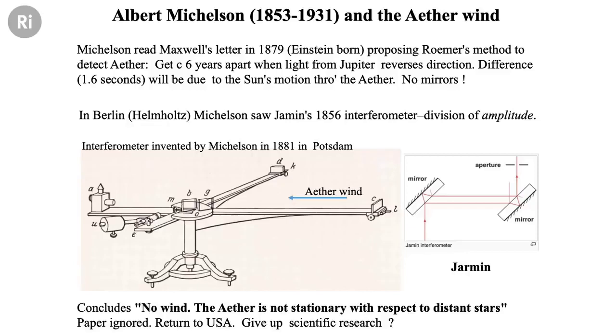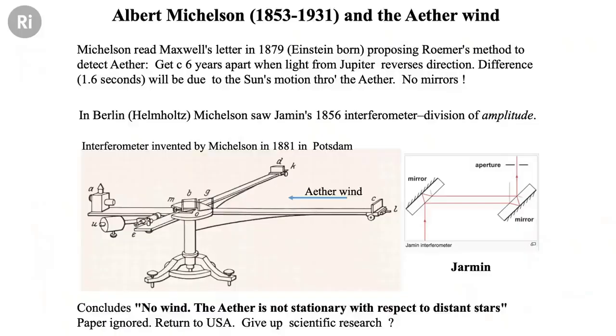He expected there to be a change, certainly six months later when the Earth was going in the opposite direction. When he rotated his interferometer, he got no result — no effect. There was no change in the time for light across or with the ether throughout the seasons of the year. He wrote this paper, whose conclusion was there was no ether wind — the ether is not stationary with respect to the distant stars. He thought this was an indication of his failure as a scientist and went back to America planning to give up science altogether, believing nobody had read his paper.